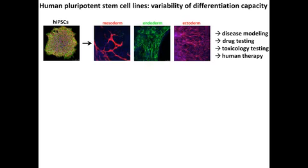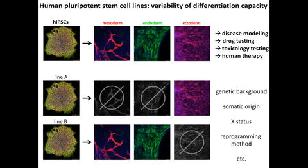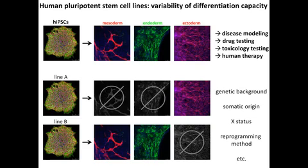As you all know, human pluripotent stem cells can self-renew and they can differentiate into derivatives of all three germ layers, so they are very nice tools for disease modeling, drug testing, and toxicology testing, but they also hold great promise for human therapy. However, there is variability between lines in terms of differentiation capacity, which is thought to be linked to the genetic background, the somatic origin from which the IPS cells were derived, the X chromosome status in female lines, and the reprogramming method.